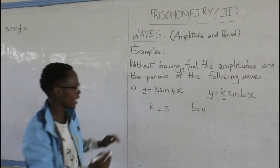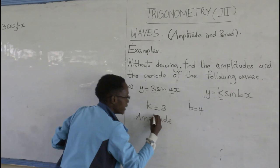So, how do we find the amplitude? The amplitude of the wave is simply the value of K. So, the amplitude of our wave equals to 3.